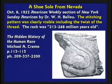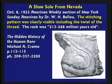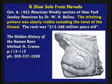American Weekly in 1922 ran an article about the sole of a shoe found in Nevada — the stitching pattern was clearly visible, including the twist of the thread. The rock was supposedly 213 to 248 million years old. Michael Cremo, who wrote Hidden History of the Human Race, is a Hindu who spends enormous time documenting things found out of place. But he believes the standard geologic column — so when strange things are found, his conclusion is that aliens visited the planet 200 million years ago. Why not simply question the idea that the rock is 200 million years old?